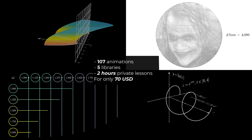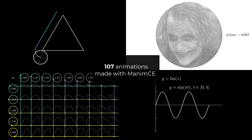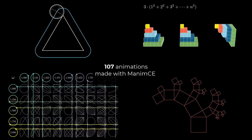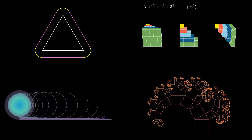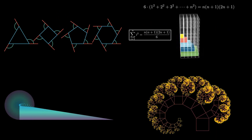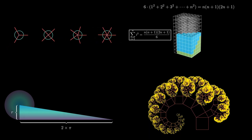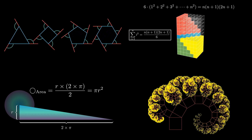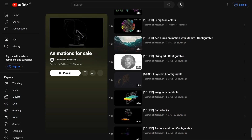The first package contains 107 animations. All the animations are made in the latest version of ManMCE, so you won't have any trouble rendering any of them. Many of these scenes are configurable — you can get new animations by just changing a few parameters. You can find all the animations in this playlist.